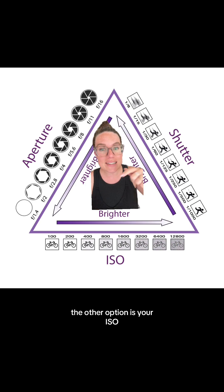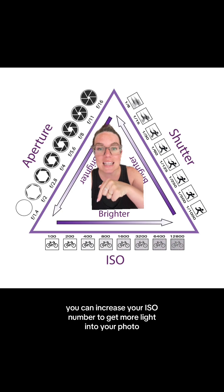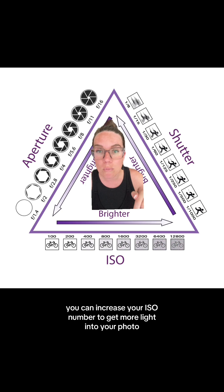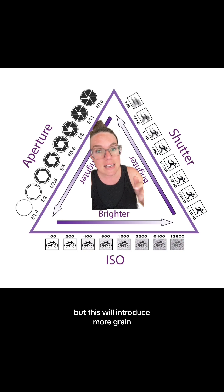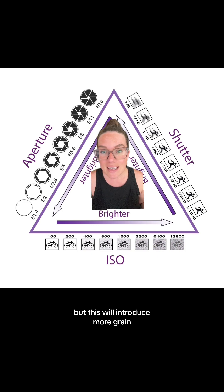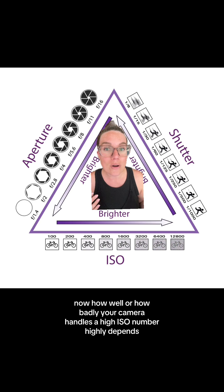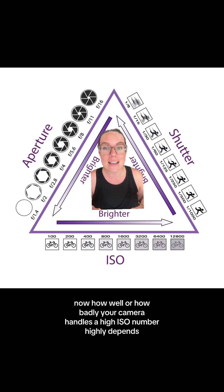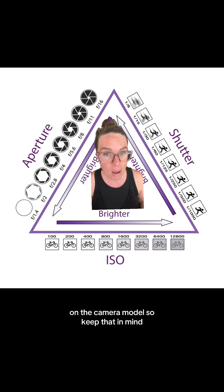The other option is your ISO. You can increase your ISO number to get more light into your photo, but this will introduce more grain. How well or how badly your camera handles a high ISO number highly depends on the camera model, so keep that in mind.